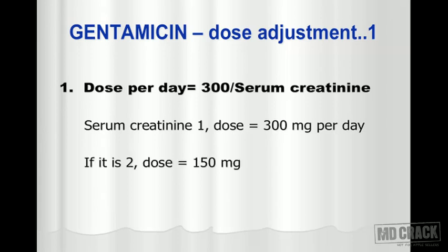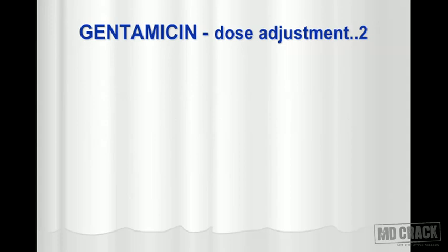For example, if serum creatinine is 2, then it will become 300 divided by 2, so that will be 150 milligrams as the total dose per day. This is how you decrease the dose as the serum creatinine goes higher and higher as renal dysfunction progresses. The second method of dose adjustment for gentamicin is next.